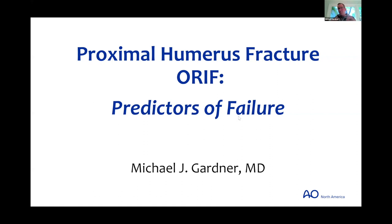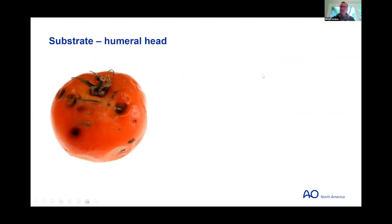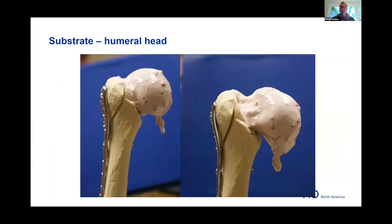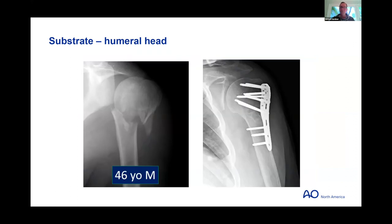Building on that — predictors of failure. There are a number of reasons why maintaining reduction and stable fixation in proximal humerus fractures is difficult, but probably the most contributory is the humeral head we're trying to hold with metallic implants. It's been likened to a rotten tomato, tennis ball, or rotten egg. Locking screws are very rigid and stable, and we often see the head just melt off these screws.